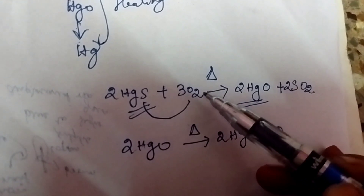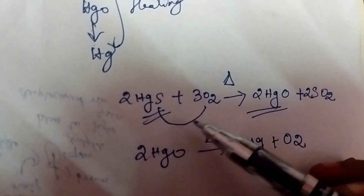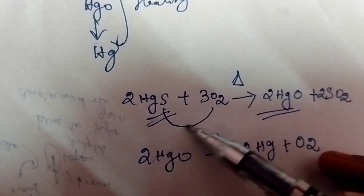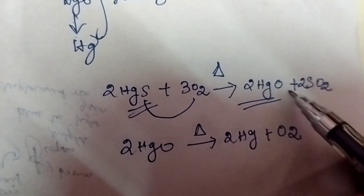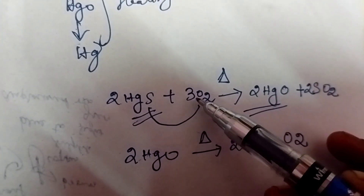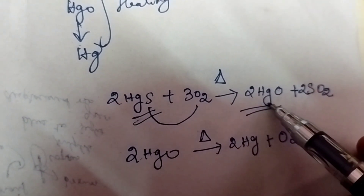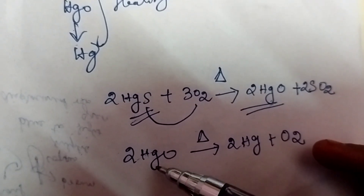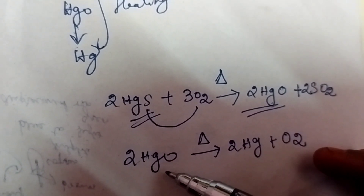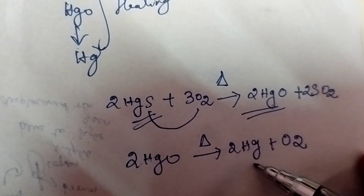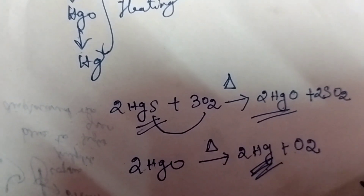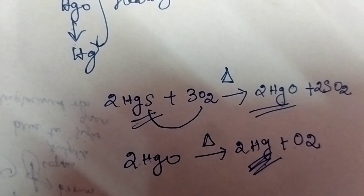This mercuric sulfide reacts with oxygen present in air. SO2 is liberated, and unbalanced oxygen joins with Hg to form mercury oxide. Then again heating this mercury oxide, mercury and oxygen are obtained. Finally we get the metal.